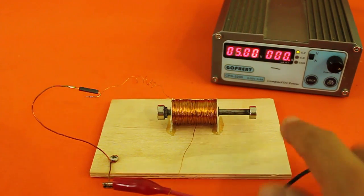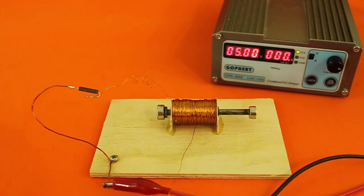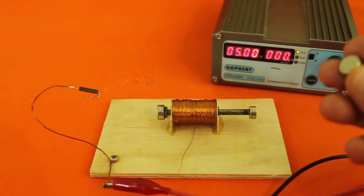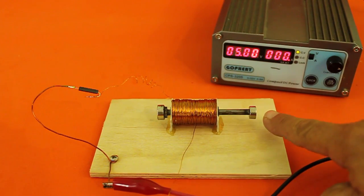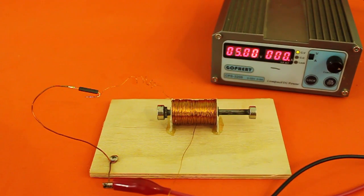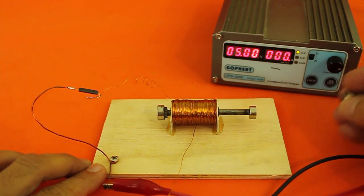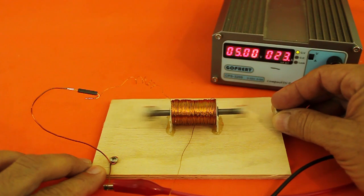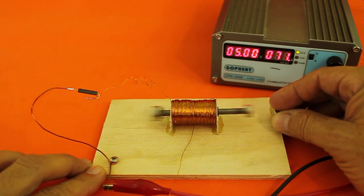Now we can use a spring on this side but we can also use another magnet with the same polarity as this side, so they repel each other. And there you have it.